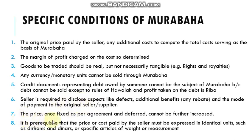Number seven: the price fixed as per agreement and deferred cannot be further increased. For example, you cannot have a deal where the buyer is told to pay 100 dollars within 30 days, but if payment is not made within 30 days, the amount increases to 120 or 150 dollars. This kind of contract is not allowed.